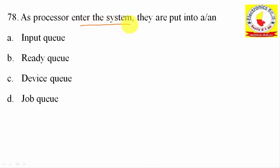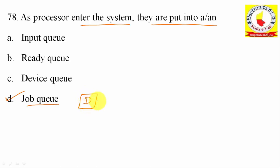When the process enters the system, it is placed into the job queue. It requires resources in order to execute. The sequence is: job queue (also called ready queue), then execution, then termination or exit. So option D is correct.